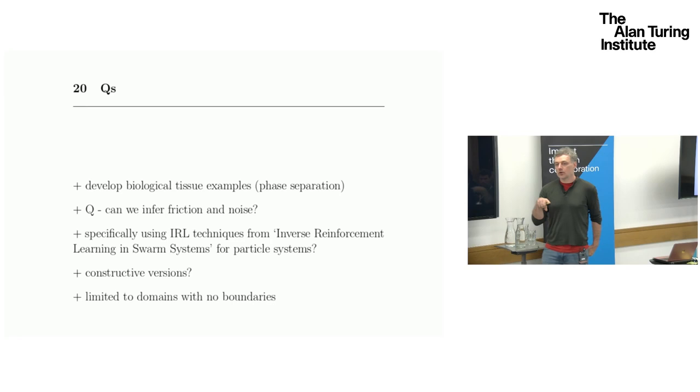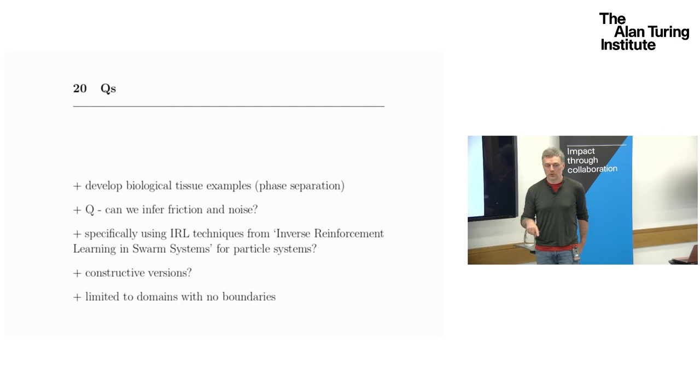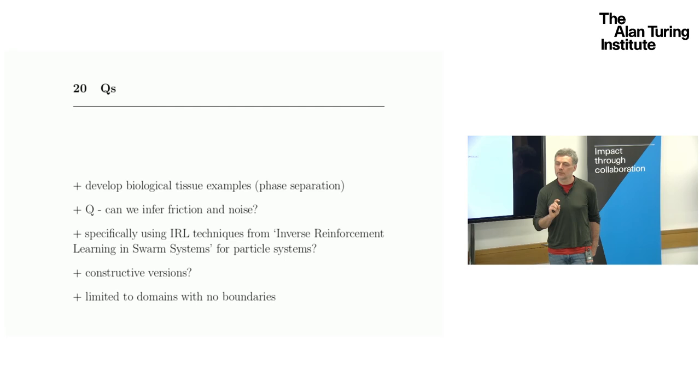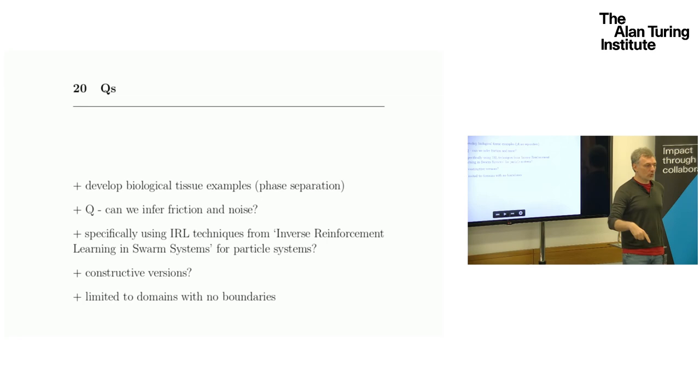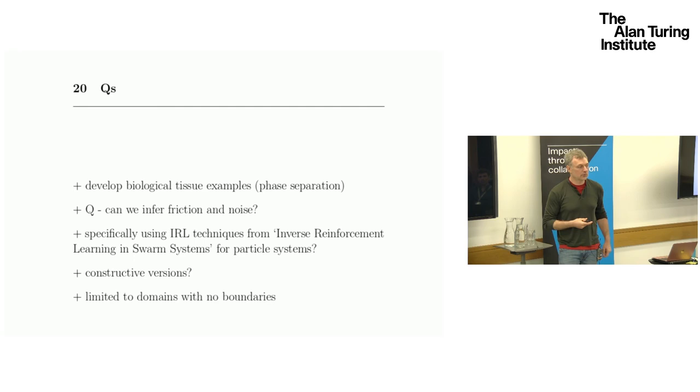Specifically, can we use, so Heinz, who's going to be a speaker at this afternoon session, has a series of work on inferring by using inverse reinforcement learning techniques for indistinguishable particles, some kind of version of Cucker-Smale, right? This is called the swarm systems, but I think swarm just means they're indistinguishable. And because they're indistinguishable, the potentially super costly inverse reinforcement learning techniques can be somehow made cheaper. That would be one thing to try to do.